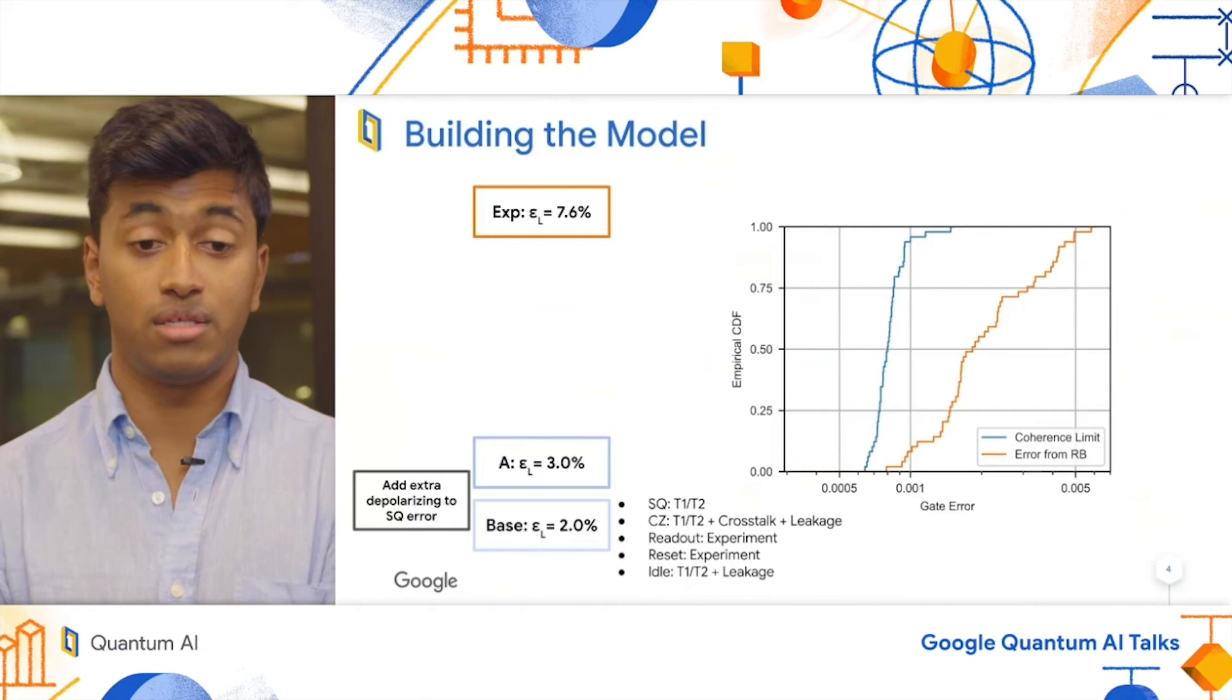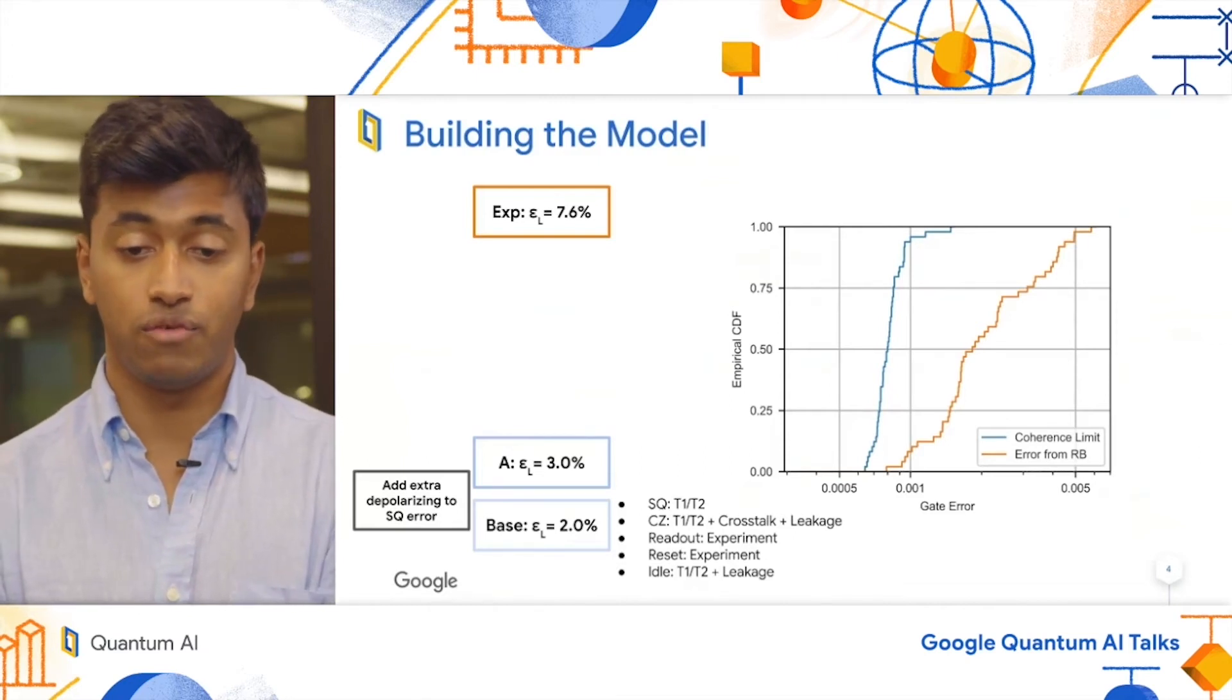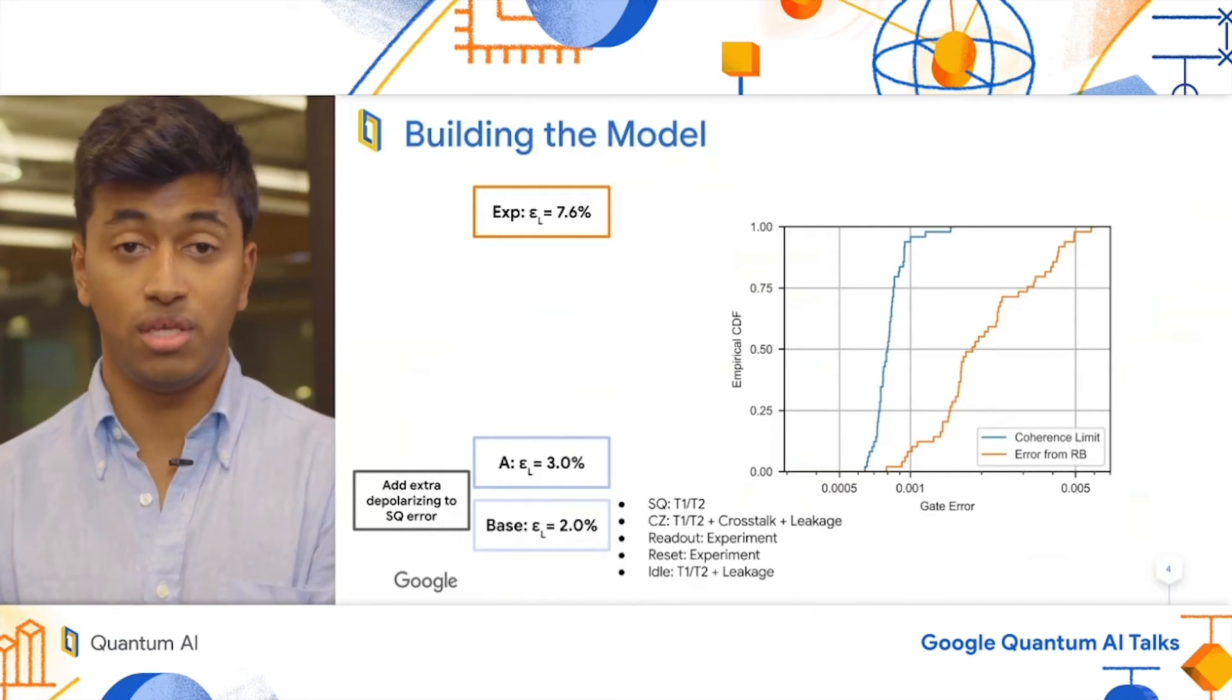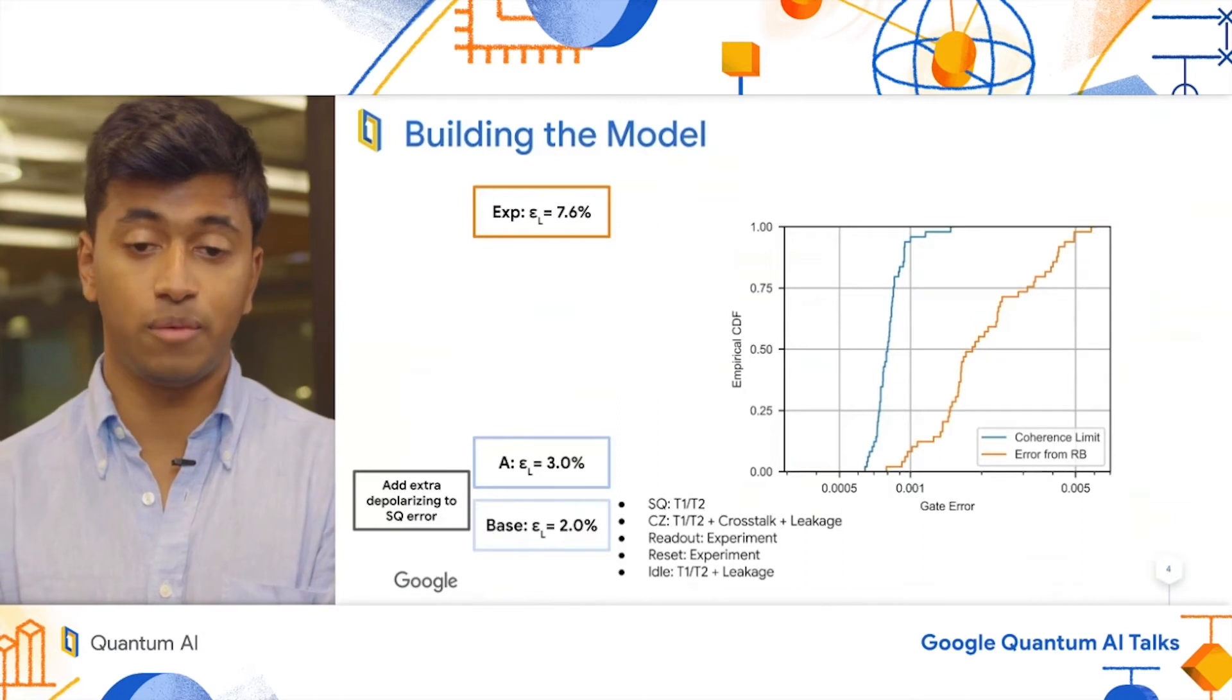On the right, I'm showing a CDF where the blue curve is the coherence limit for our qubits, for single qubit error rates. You can see that the orange curve, which is the actual experimental errors pulled from randomized benchmarking,